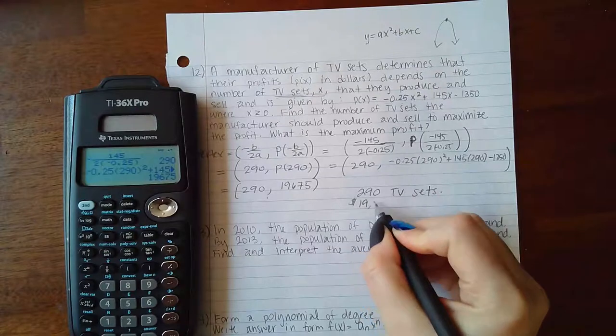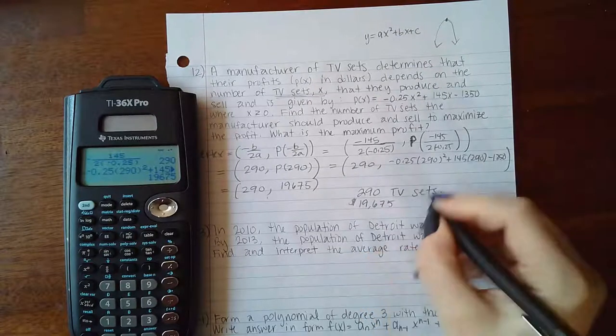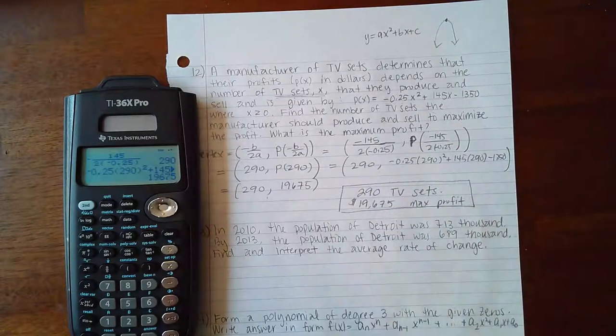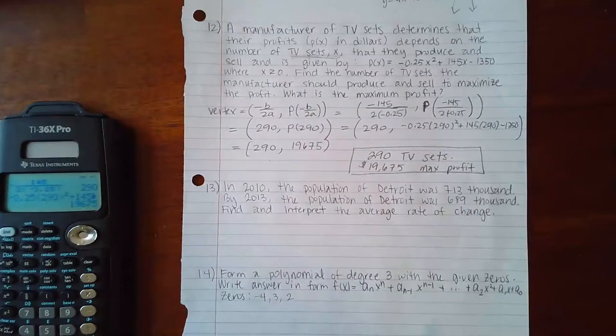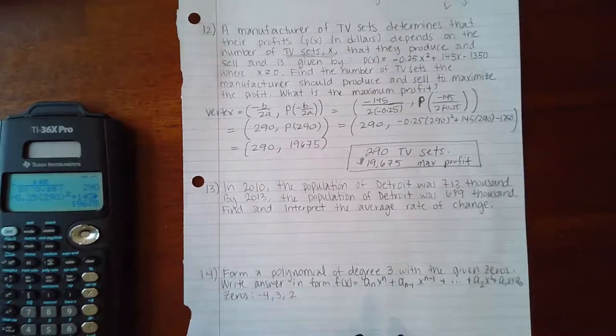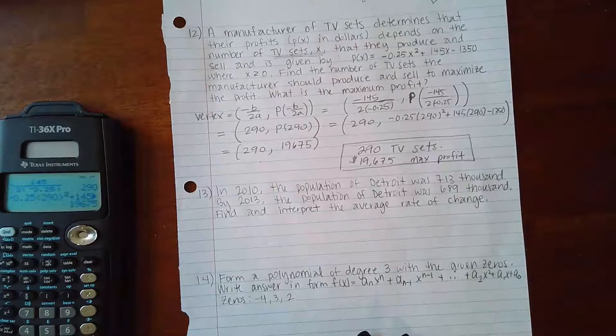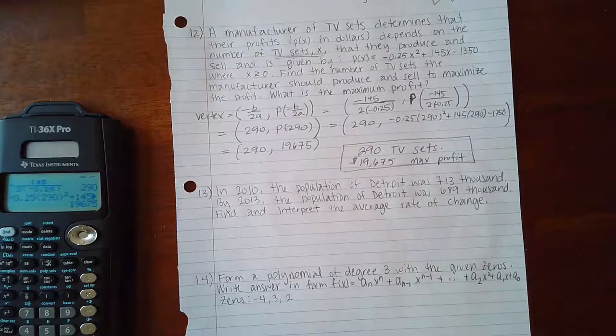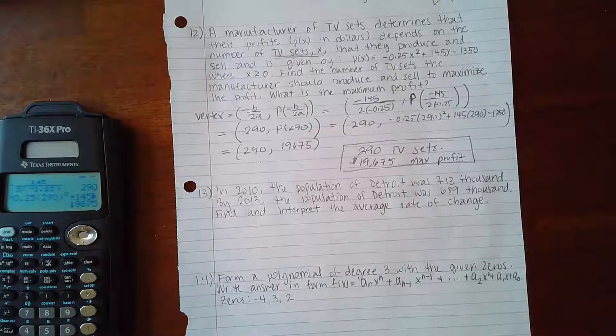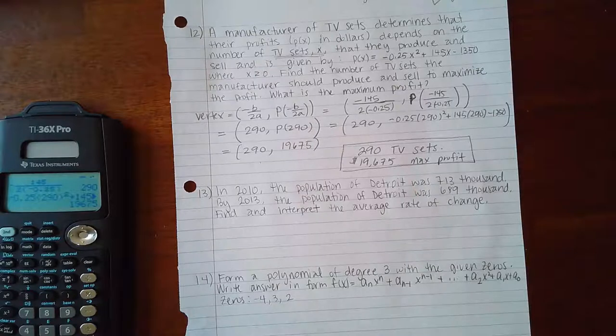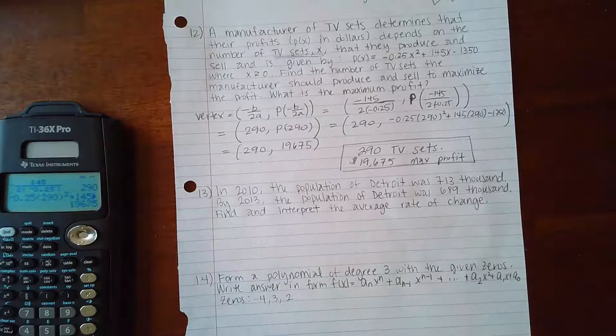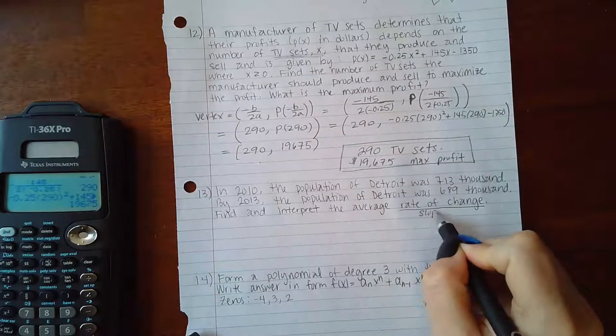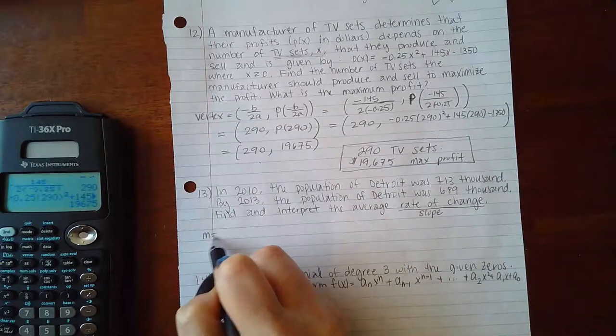Number 13 says: In 2010 the population of Detroit was 713,000. By 2013, the population of Detroit was 689,000. Find and interpret the average rate of change. Average rate of change is just a fancy way of saying slope, so I've got to find the slope. We have a slope formula.